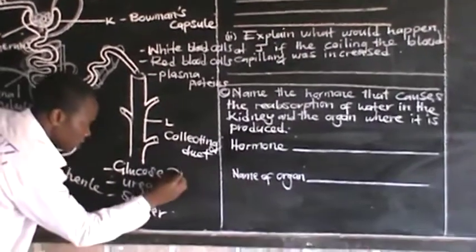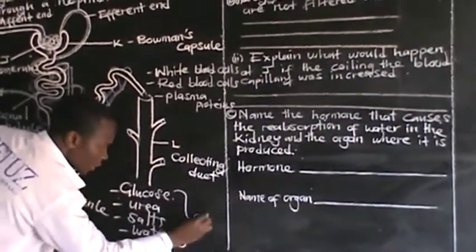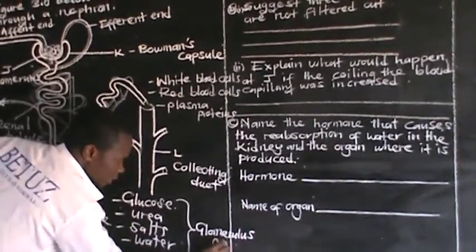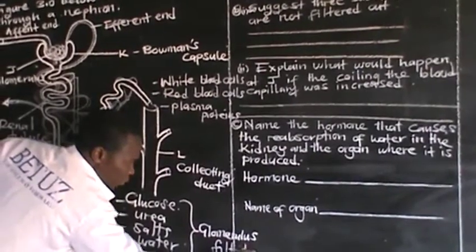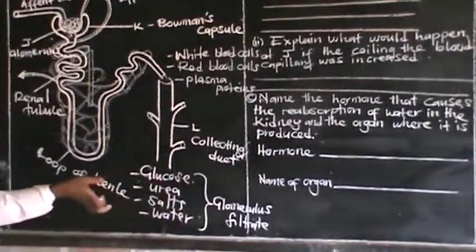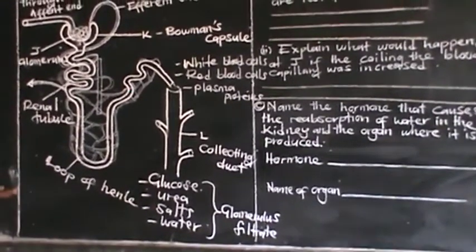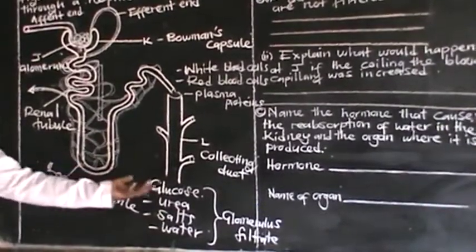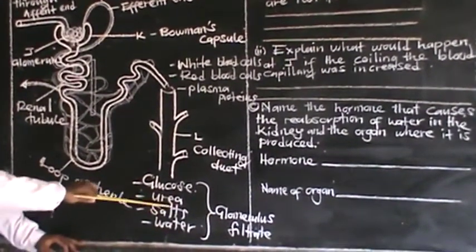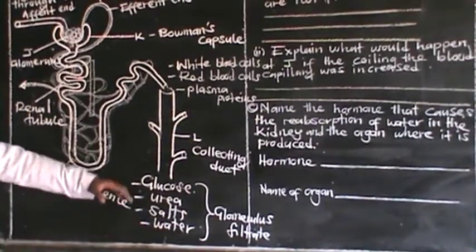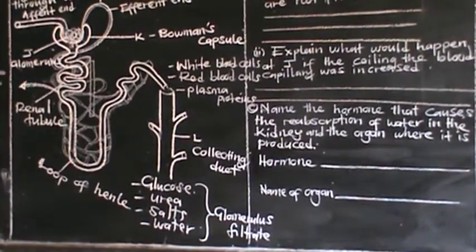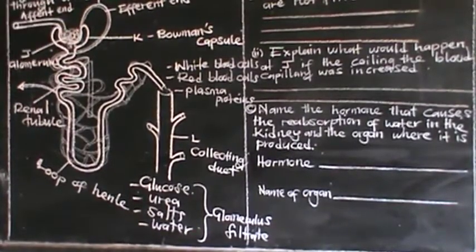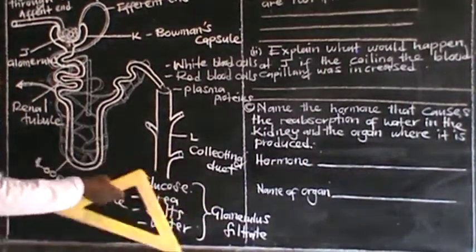These filtered substances — glucose, urea, salts, and water — form what we call the glomerular filtrate. They are called the glomerular filtrate because they are substances with small molecules which have passed through the glomerulus into the Bowman's capsule.